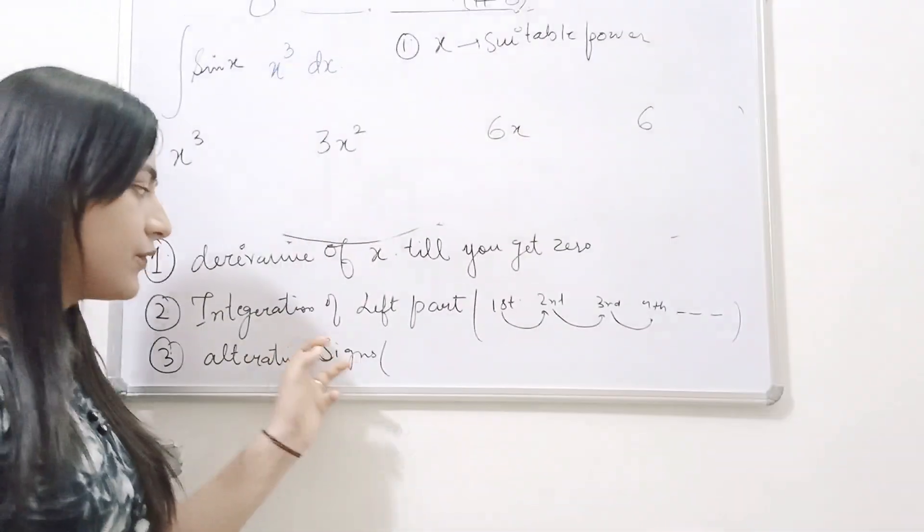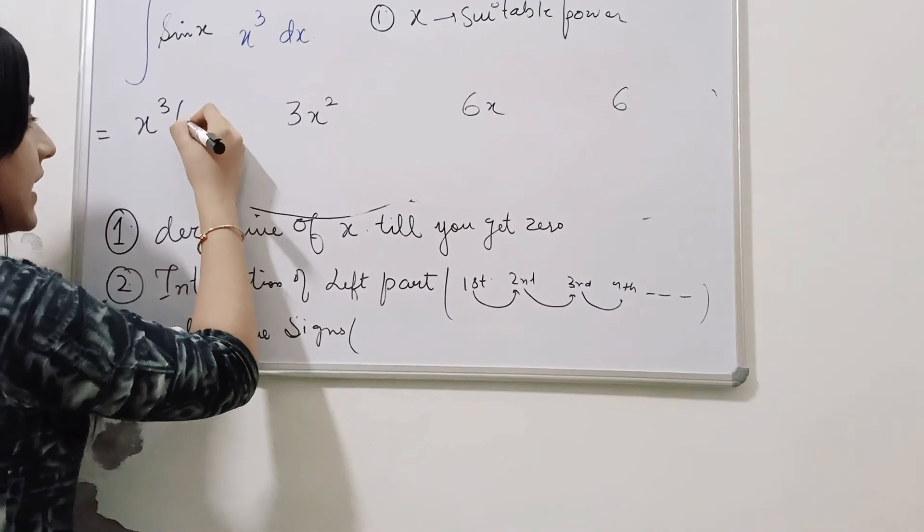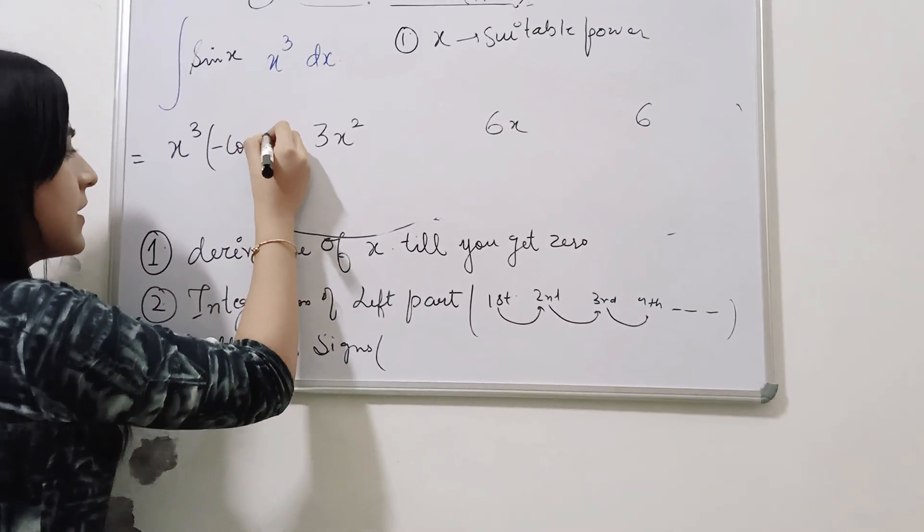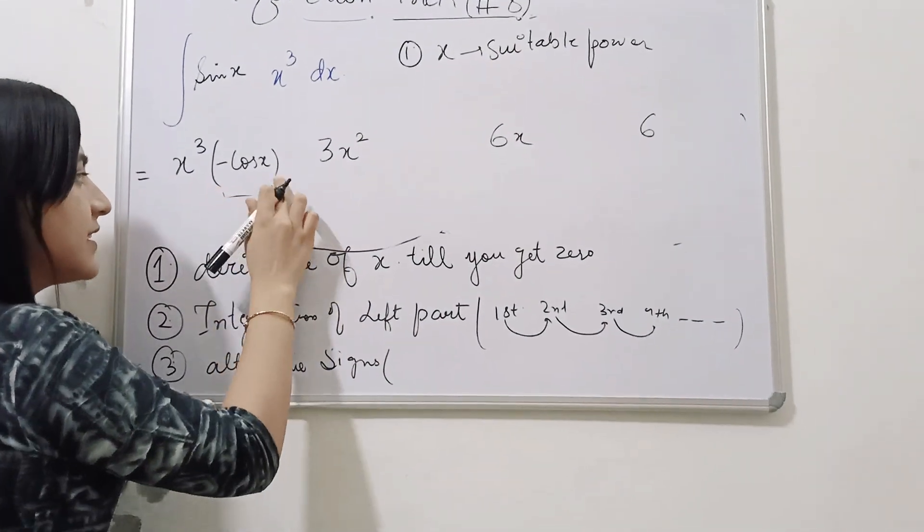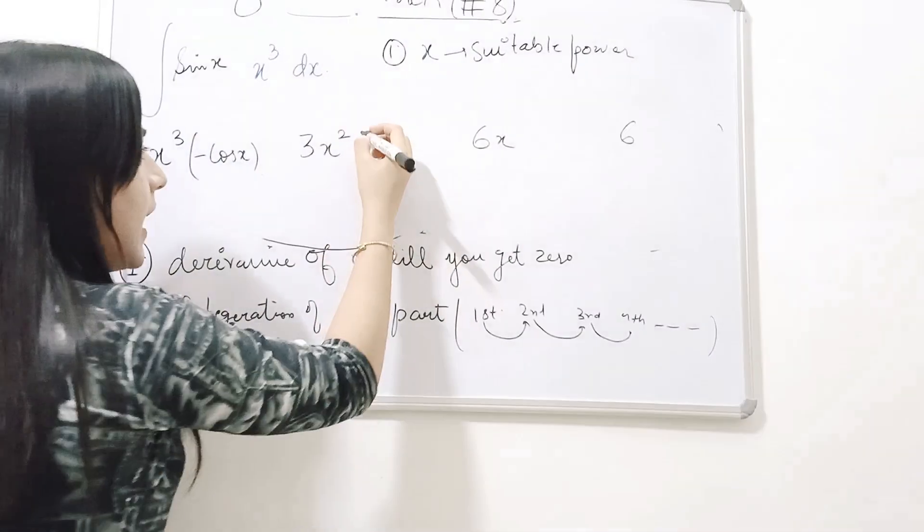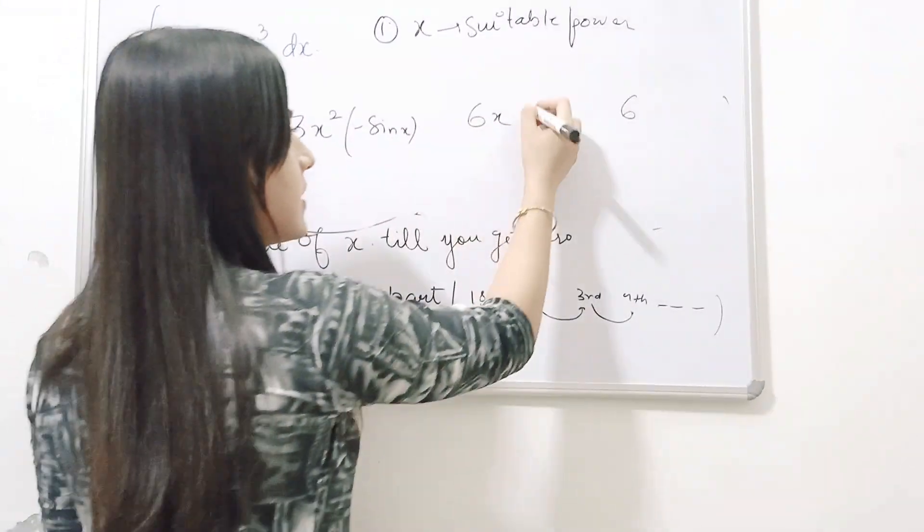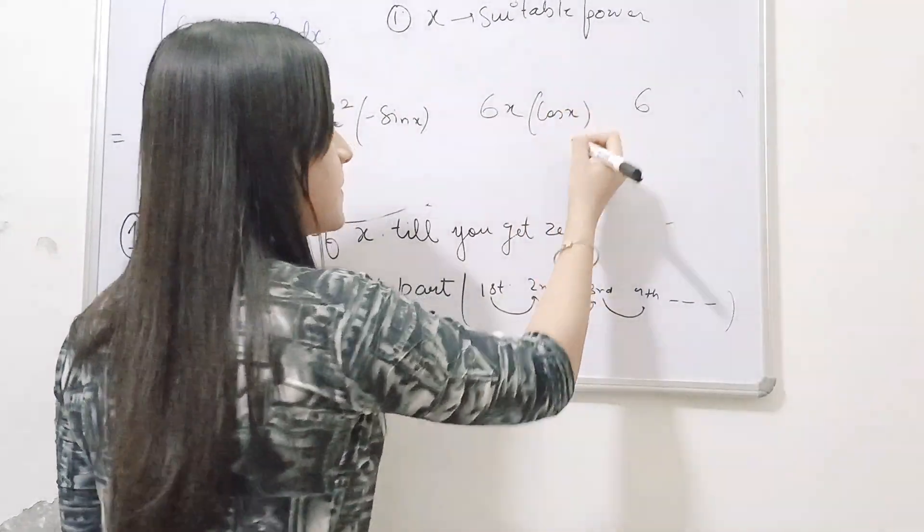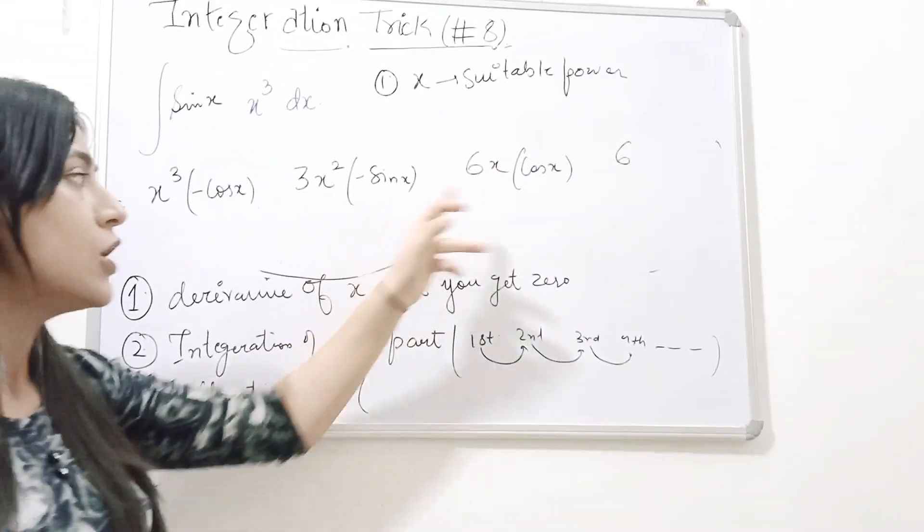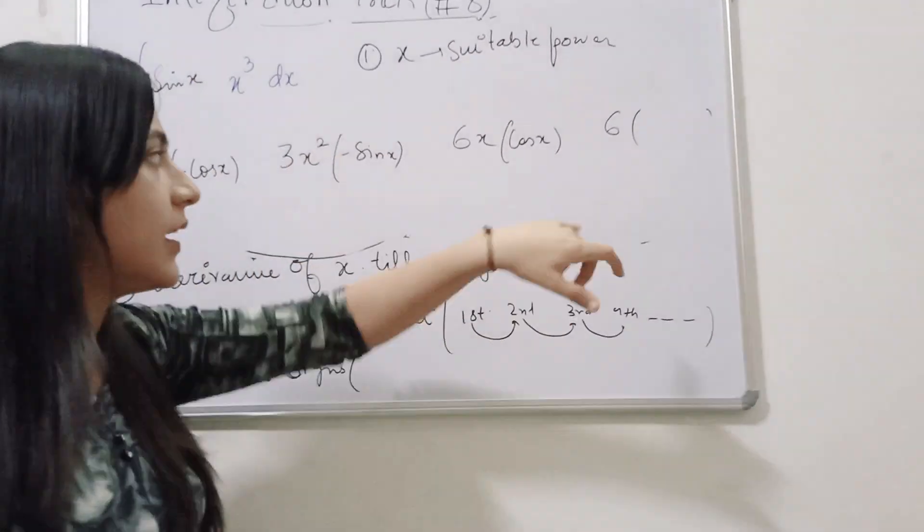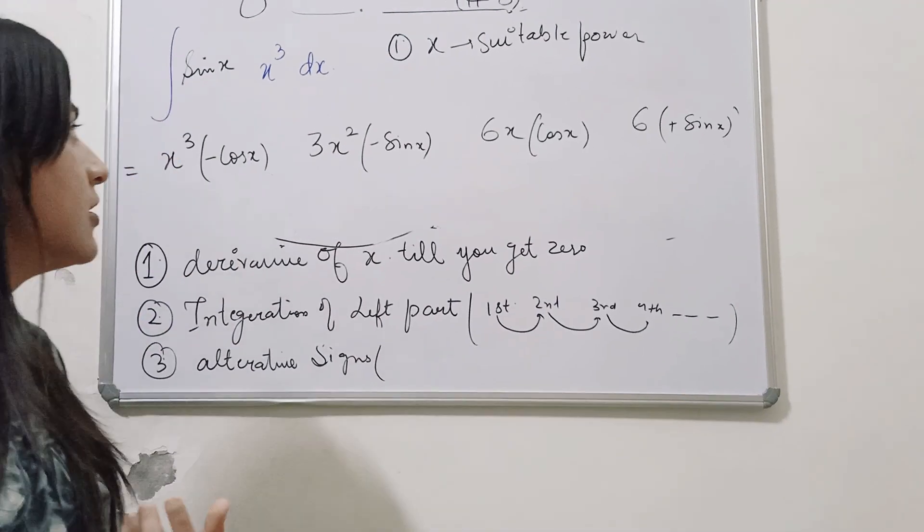Then you have to just do the integration of the left part, what is the integration of sin x, it is minus of cos x, then what you will do is, integration of minus of cos x, take this minus as a constant along with you, and this will be minus of sin x, now the integration of minus of sin x, it will be the cos of x, because negative is already there, and then the integration of cos x, it is again minus, it is sin of x.